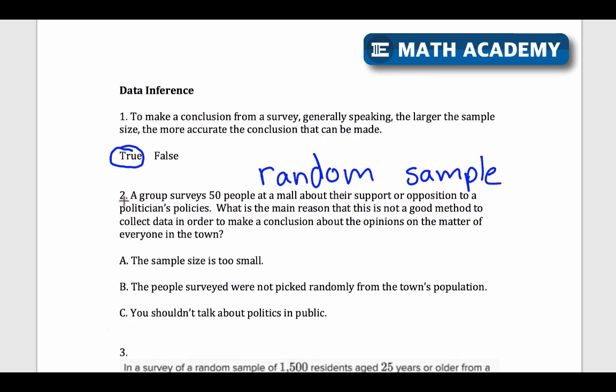Let's see what question two says. A group surveys 50 people at a mall about their support or opposition to a politician's policies. What's the main reason that this is not a good method to collect data in order to make a conclusion about the opinions on the matter of everyone in the town? Is the sample size too small? Well, 50 people, I could use that to make an estimate, I might get a decent estimate, if I have taken my sample properly, which is making a random sample.